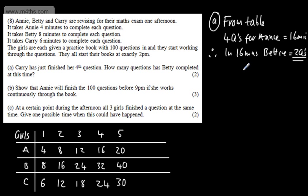In part B for three marks, it says show that Annie will finish 100 questions before 9pm if she works continuously through the book. So let's set this up. 100 times by 4 is going to be equal to now 400 minutes.